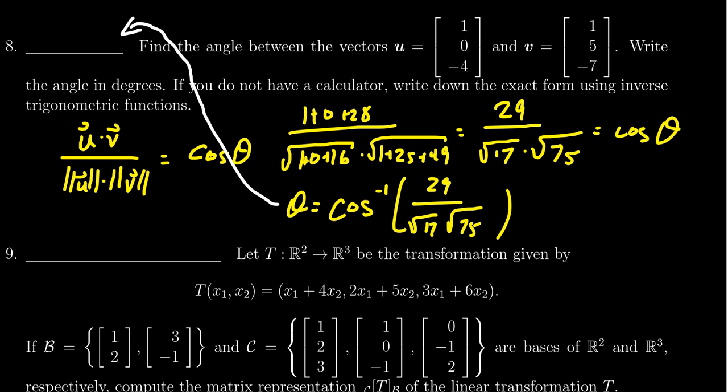But with the scientific calculator or graphing calculator, this would be easy to put in. Do make sure it's in degree mode for which when you calculate cosine inverse or sometimes called arc cosine of 29 over the square root of 17 and the square root of 75, your calculator then gives the response that the angle theta would be approximately 35.7 degrees.